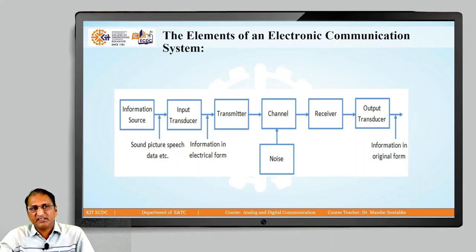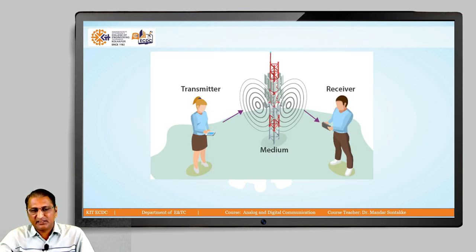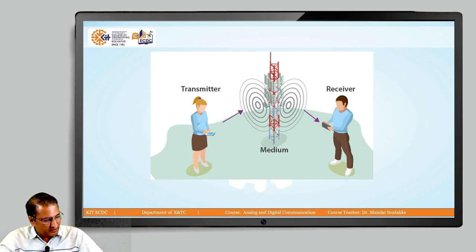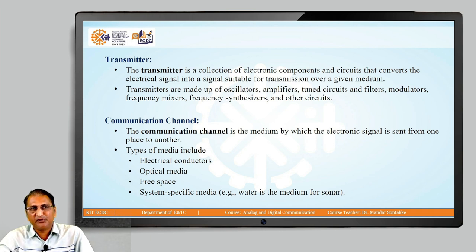In last lecture, we discussed the elements of an electronic communication system. The general picture is like this: we have a transmitter, we have a receiver, and there is a medium. The transmitter is a collection of electronic components — it is an electronic circuit that converts the electrical signal into a signal suitable for transmission over a given medium.